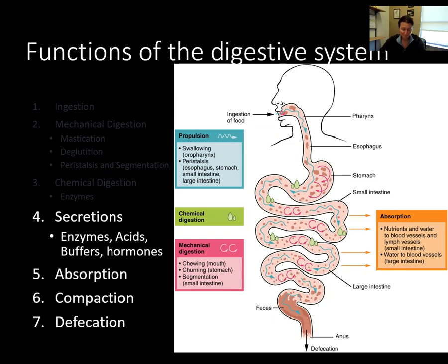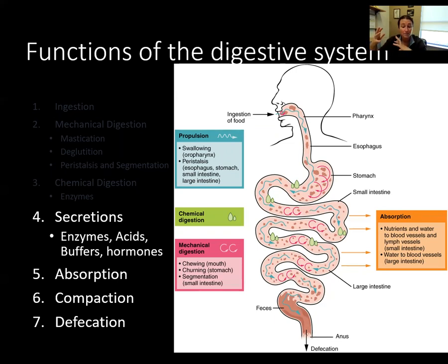The final function of the digestive system is defecation — the conscious release of waste products. Defecation is controlled both consciously and subconsciously, allowing us to choose when it's convenient. This control takes time to develop, which is why infants wear diapers for the first couple years of life.